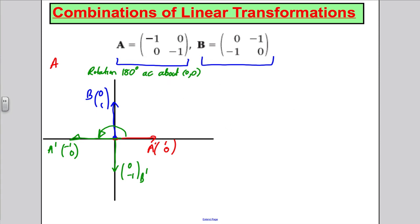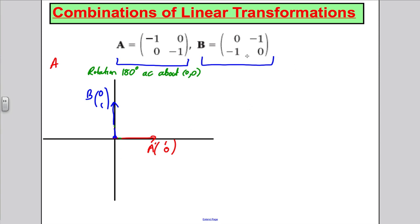Now let's do the other one. We'll work out where the unit vectors go after this transformation. The vector (1, 0) goes to the first column, which is (0, −1) — 0 across, −1 down — so A dash goes down here. And (0, 1) goes to (−1, 0) — that's B dash. Clearly this is a reflection in the line y = −x.